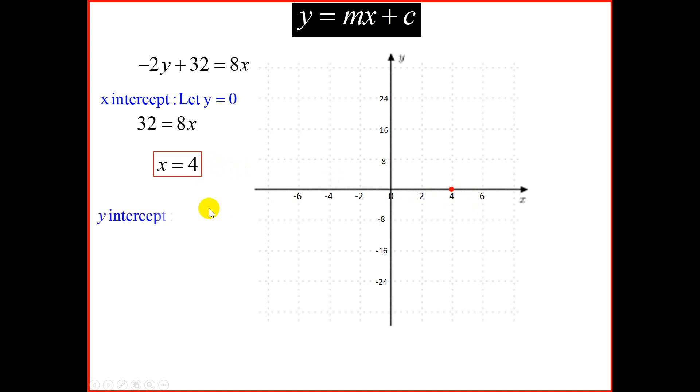To find our y-intercept, we let x to be 0. So this entire part, 8 times 0, would be 0. We can say minus 2y plus 32 is equal to 0. Moving 32 on the other side, we have negative 32. Dividing both sides by negative 2, we will get y equal to 16. These are big numbers, so I scaled my y-axis. Every centimeter is represented by 8 units. So we have 8, 16, 24. So on the y-axis at 16, we'll place a dot.